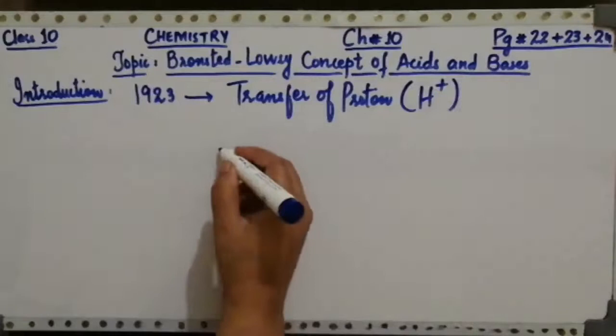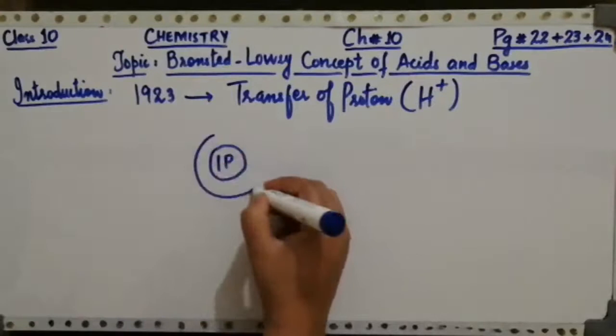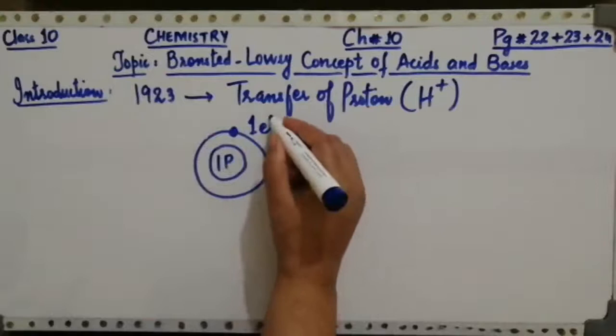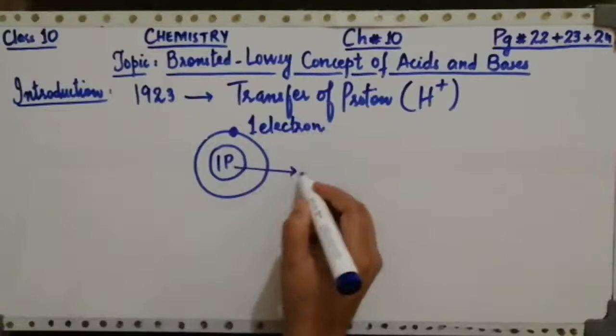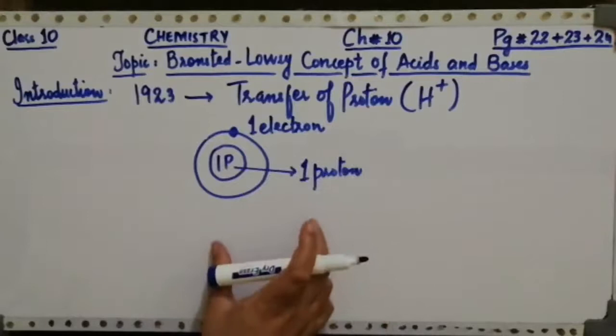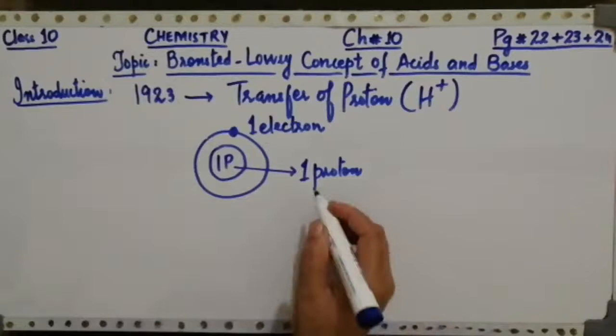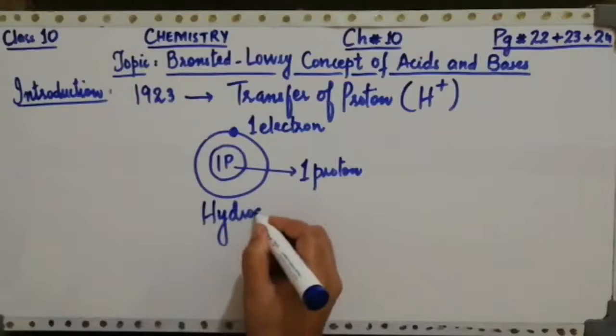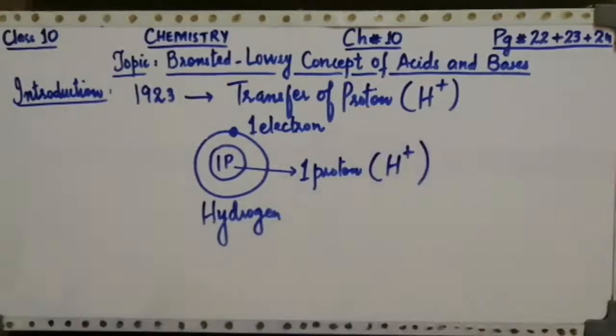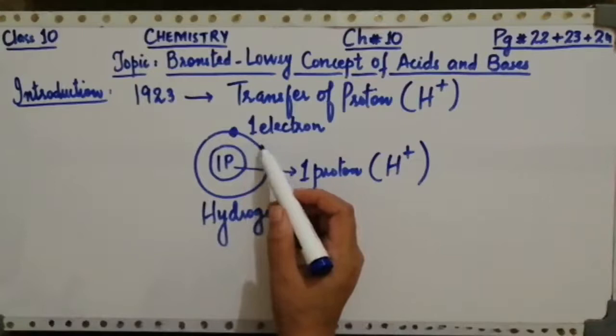In 1923, Bronsted and Lowry presented this concept of acids and bases, which was based on the transfer of a proton. What is a proton? Here, proton means the hydrogen ion, H+. As we know from the atomic structure of hydrogen, it contains one proton having no neutron and one electron in its outermost shell. So scientists have suggested that with one proton in this hydrogen atom, we can also call it a hydrogen ion.